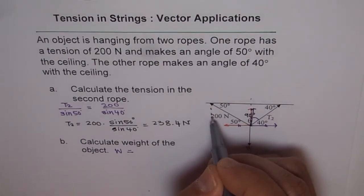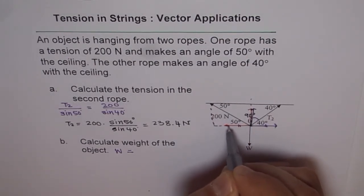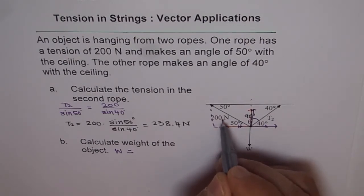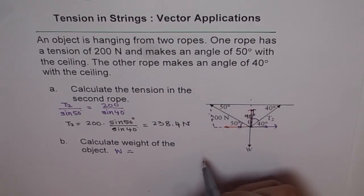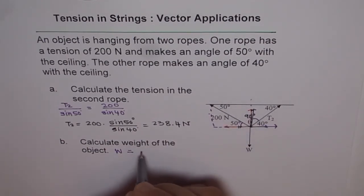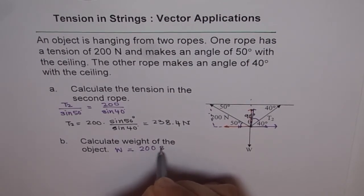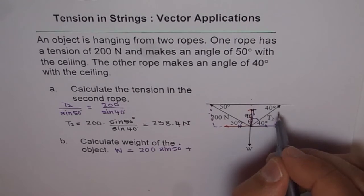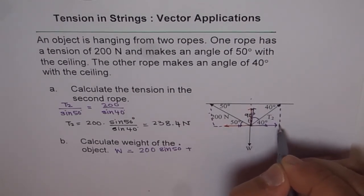If you see T1, let me just make a right triangle. This is 50 degrees. The horizontal component will be 200 cosine of 50 and the vertical component is 200 sine of 50. That is the upward component because of tension 1. We will write this as 200 sine of 50 degrees plus...